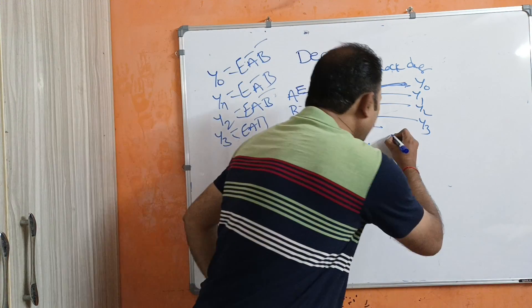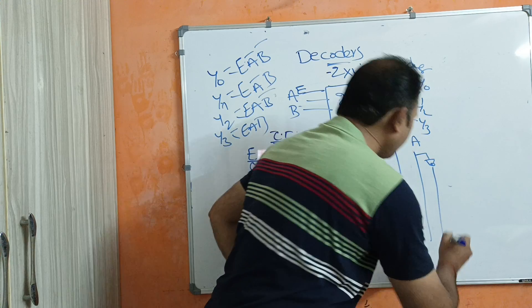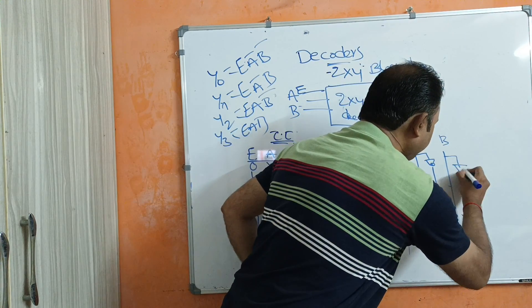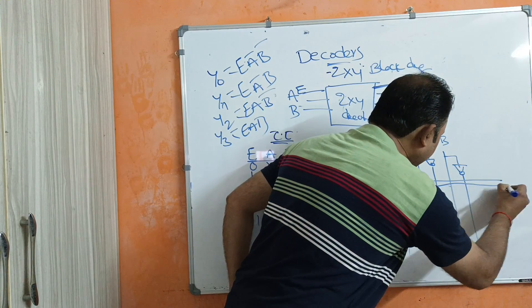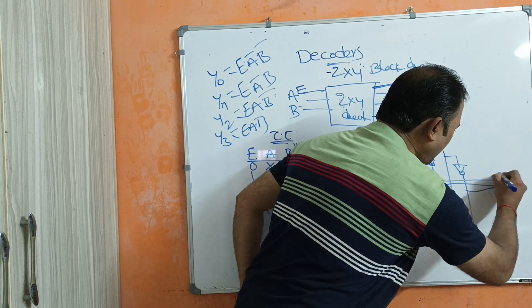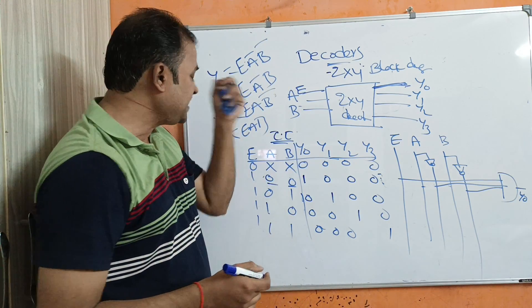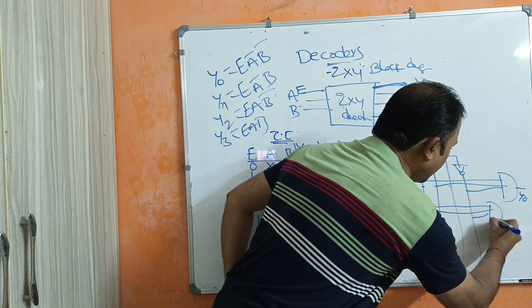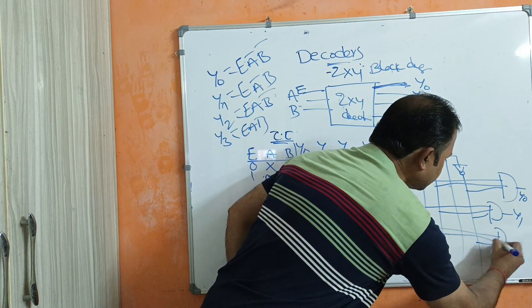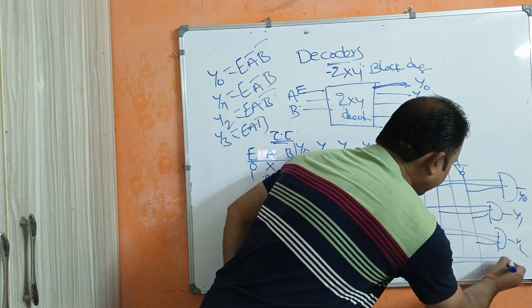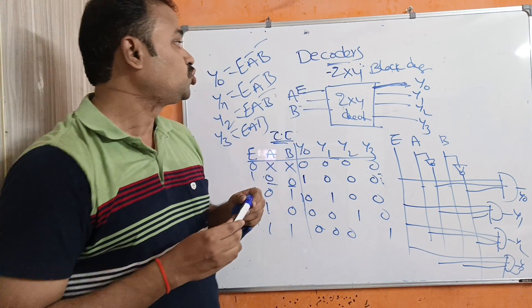Now let us see the logical circuit. We require input lines for E, A, Ā, B, and B̄. For Y0, the formula is E · Ā · B̄ — connect E, Ā, and B̄ to an AND gate to get Y0. For Y1, connect E, Ā, and B to an AND gate. For Y2, connect E, A, and B̄. For Y3, connect E, A, and B. This completes the introduction to decoder and the 2-by-4 decoder.